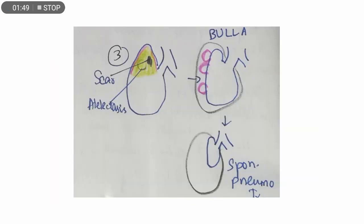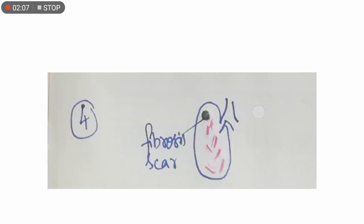The third type, distal acinar emphysema, affects the upper lobes and mainly affects the periphery of the lungs, which means it's going to cause bulla. When the bulla ruptures, there is spontaneous pneumothorax. Sometimes it occurs in scarring and atelectasis as well.